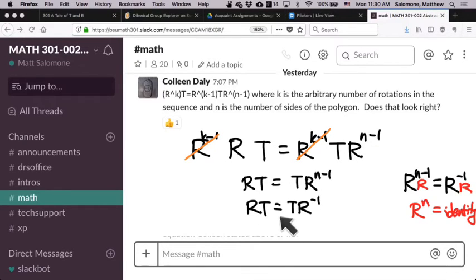So another way of understanding this equation is that RT is TR inverse. And this is kind of a nice way of understanding it, because now we don't have to bring N into the mix, right? We can just understand that whatever polygon we happen to be working with, RT, so a counterclockwise rotation followed by a reflection, is the same thing as a reflection followed by a clockwise rotation.